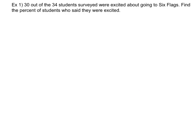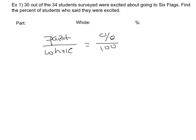Here's our first problem. 30 out of the 34 students were excited about going to Six Flags. Find the percent of students who said they were excited. The first thing we're going to look for is what information we have. There are three pieces of information you might be given in these percent problems: the part, the whole, and the percent. We're going to use that equation — part over whole equals percent over 100. Our problem tells us 30 out of 34 students surveyed, so the part is 30, the whole is 34, and the percent is X.